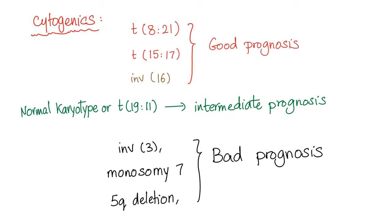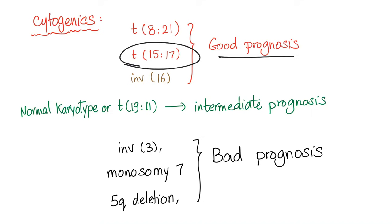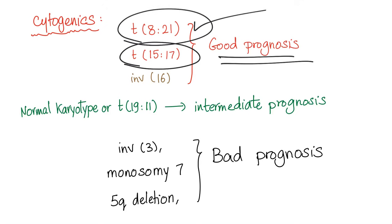Cytogenetics of AML: certain findings carry good prognosis, including t(15;17) and t(8;21). Normal karyotype or intermediate-risk findings carry intermediate prognosis. Other abnormalities carry bad prognosis. The key ones to remember as good prognosis are t(15;17) and t(8;21), since M2 is the most common subtype.